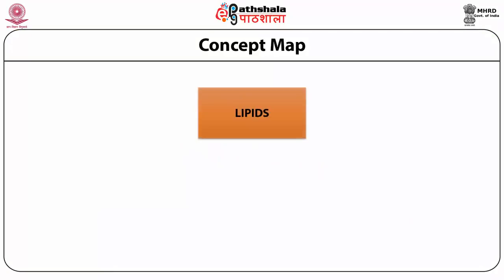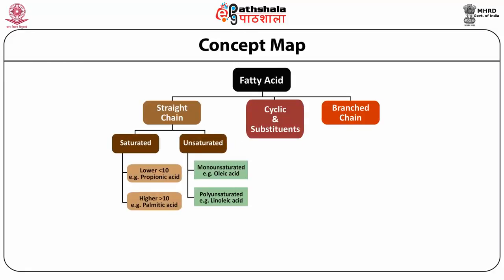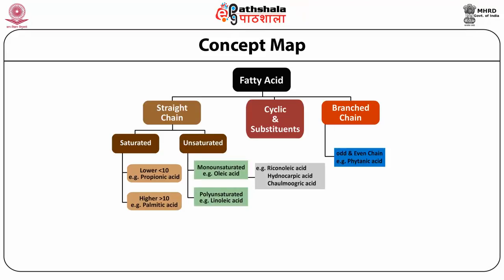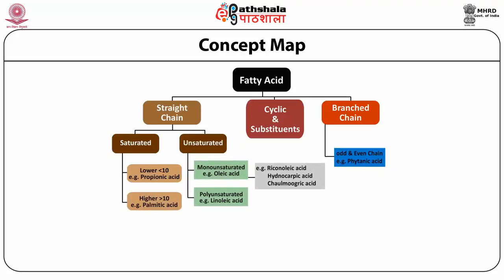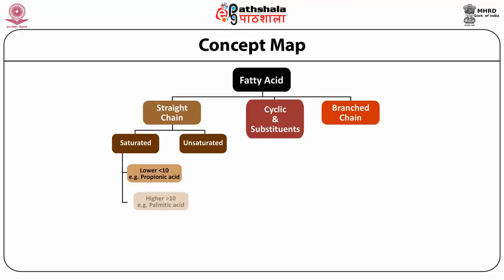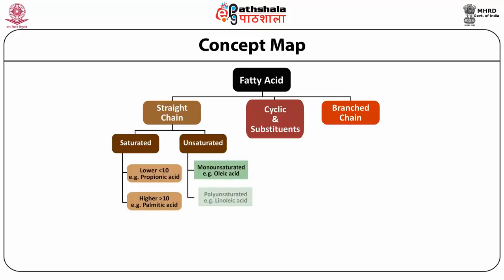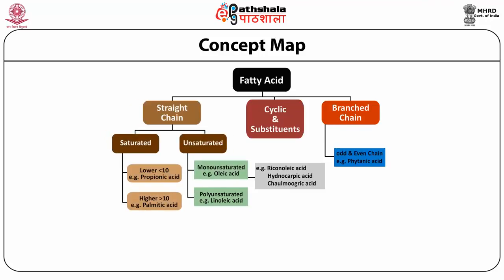Chemically, lipids are defined as esters of glycerol and fatty acids, or referred to as triglycerides of fatty acids. Lipids are composed of fatty acids and glycerol, and these fatty acids can be further subdivided into straight chain fatty acids and branched chain fatty acids. The straight chain fatty acids can be further subdivided into saturated fatty acids — those having less than 10 carbons and those having more than 10 — for example, propionic acid and palmitic acid.